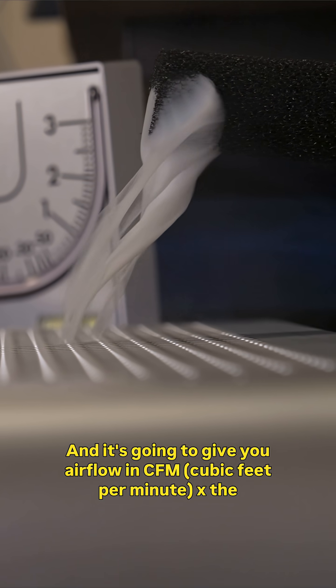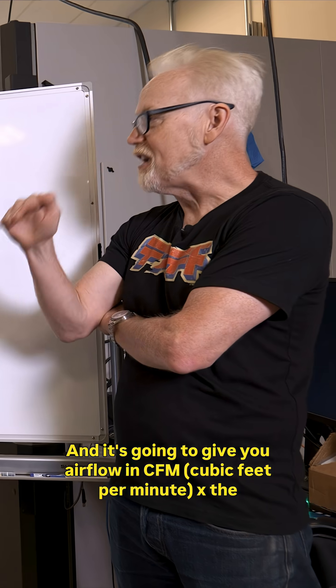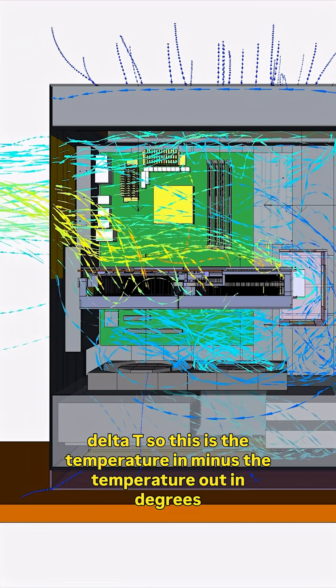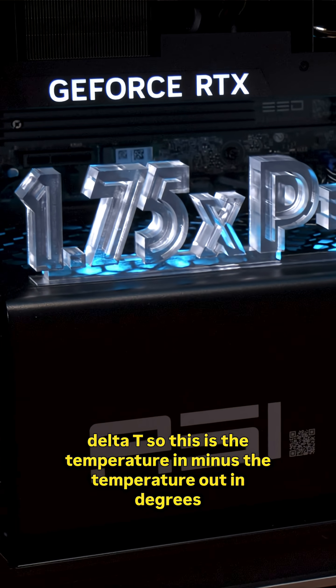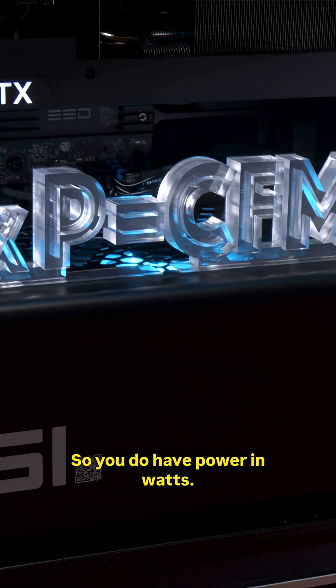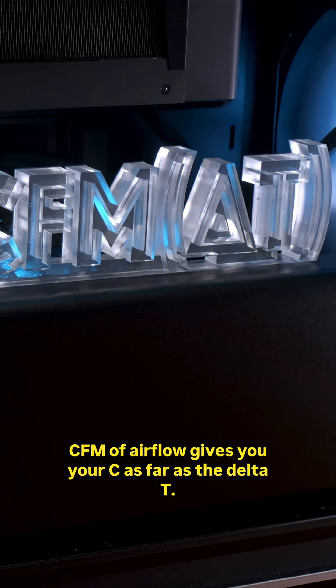It's going to give you airflow in CFM (cubic feet per minute) times the delta T. This is the temperature in minus the temperature out in degrees Celsius. So you have power in watts, CFM of airflow, and degrees Celsius for the delta T.